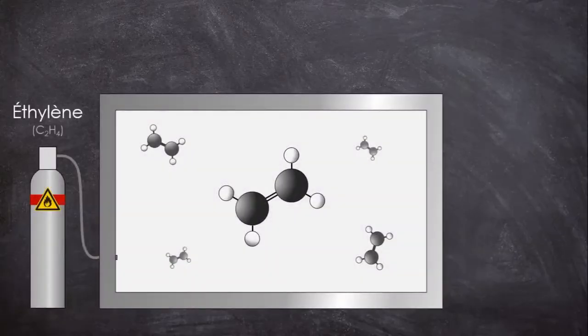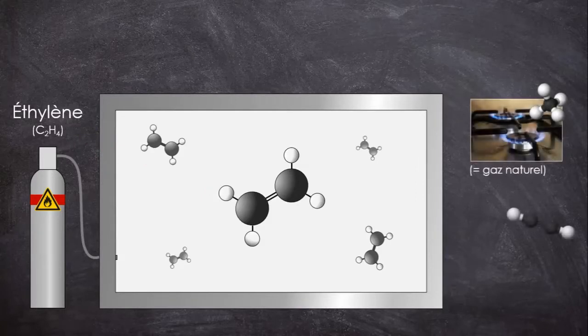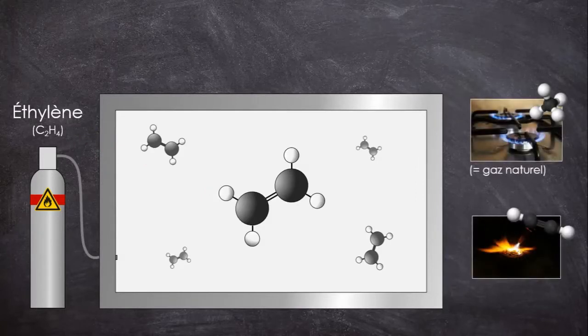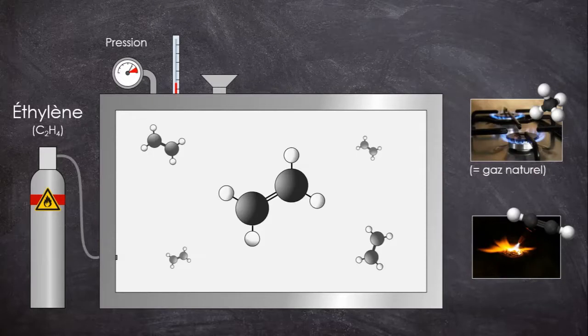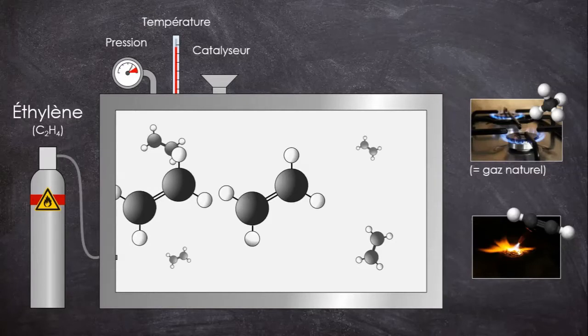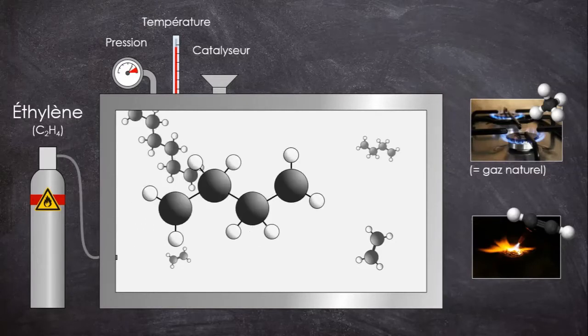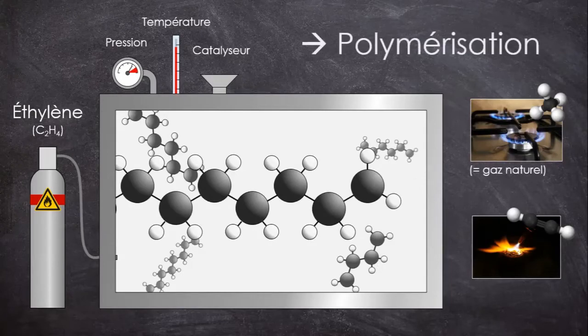Mais comment est-ce qu'on obtient ces très grandes molécules ? Eh bien voyons ça avec le plus simple des polymères, qui sert notamment à fabriquer nos sacs poubelles. Voici une molécule d'éthylène, avec ses deux atomes de carbone et ses quatre atomes d'hydrogène. L'éthylène c'est un gaz inflammable très similaire au méthane ou à l'acétylène des chalumeaux. Sa particularité, c'est qu'avec les bonnes conditions, notamment de pression, de température et la présence de catalyseurs, les molécules vont pouvoir réagir entre elles et se lier les unes aux autres. C'est ce que l'on appelle le phénomène de polymérisation.